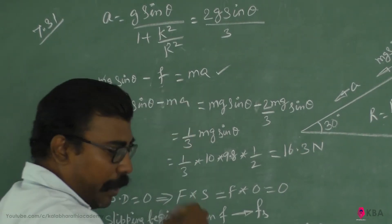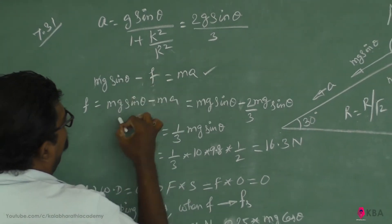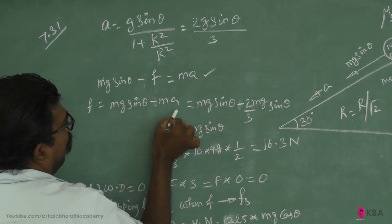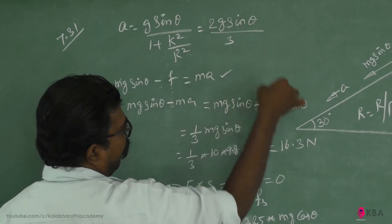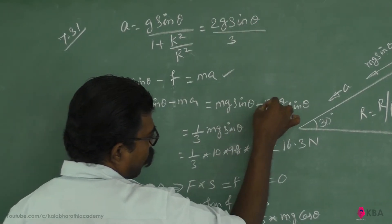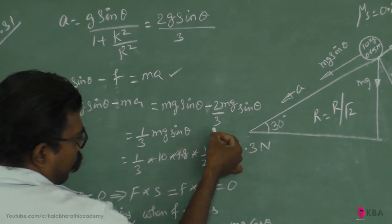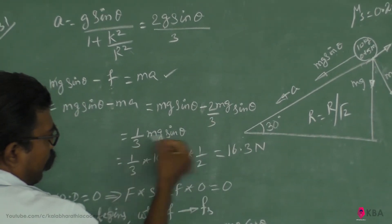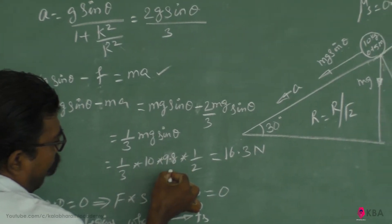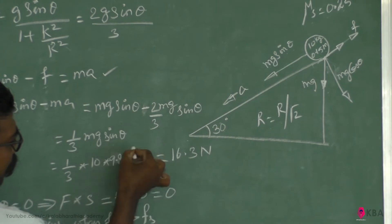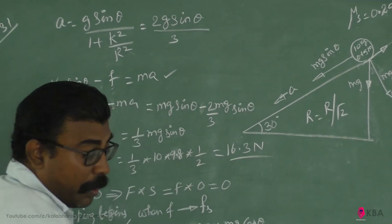The frictional force is what causes perfect rolling. From the equation of motion: f equals mg sinθ minus ma equals mg sinθ minus m times (2g sinθ / 3), which gives f equals (1/3) mg sinθ. With m = 10 kg, g = 9.8, and sinθ = sin 30° = 0.5, the frictional force is 16.3 Newtons.